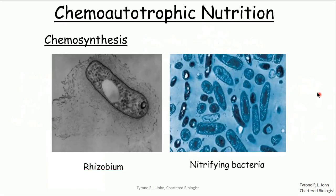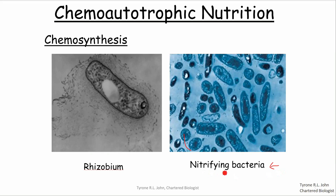On slide five, chemo-autotrophic nutrition — there are numerous examples of this, but I've picked two bacteria. On the left is Rhizobium and on the right are nitrifying bacteria, a general term for two bacteria known as Nitrobacter and Nitrosomonas — it's like a family of bacteria.